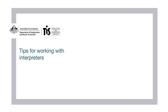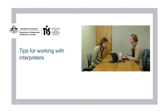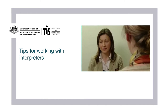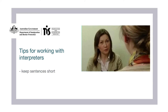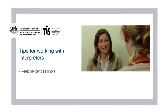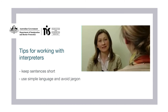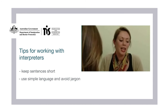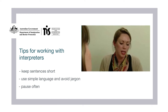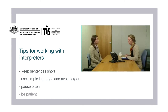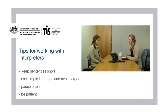You can assist the interpreter to accurately recount what you say by using some simple strategies. Keep sentences short, limited to one or two ideas per sentence. Use simple language and avoid jargon. And pause often to allow time for interpreting. Be patient with the interpreting process. Sometimes one short sentence in English may require several sentences in the other language.